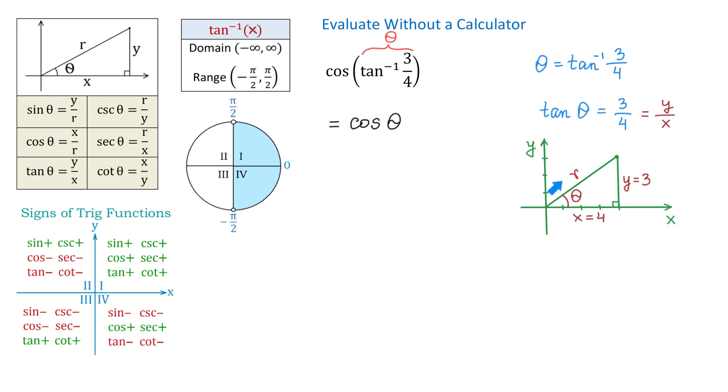To find the hypotenuse r in this triangle, we will use the Pythagorean theorem. That is, r equals square root of x squared plus y squared. Then, r equals square root of 4 squared plus 3 squared. Then, 16 plus 9 is 25, and square root of 25 is 5.